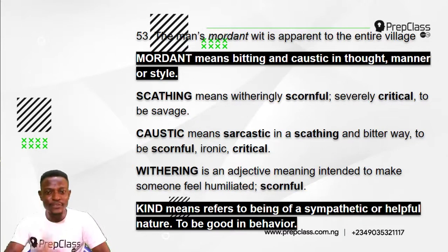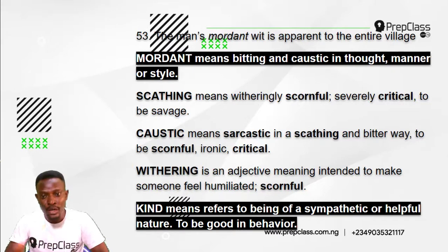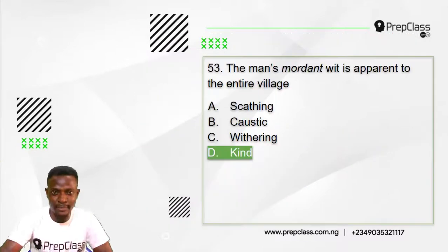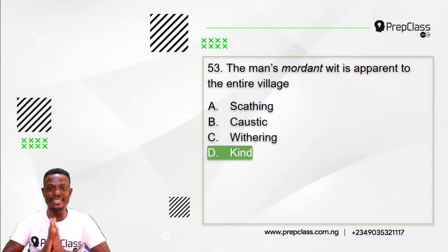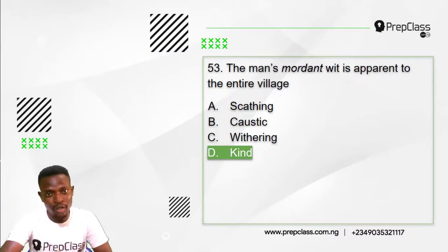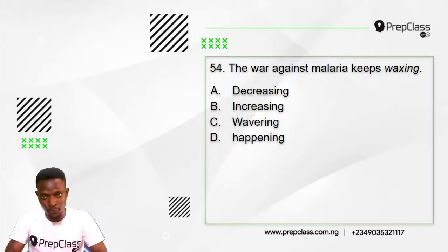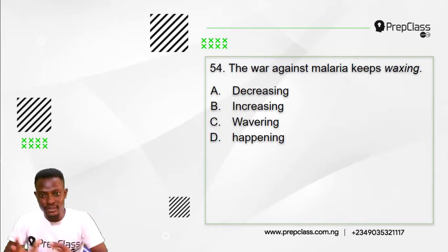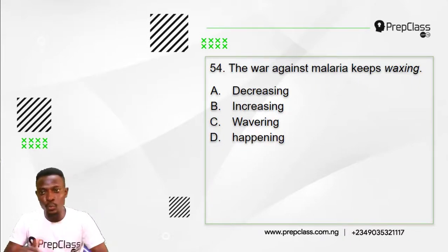'Kind' refers to being of a sympathetic or helpful nature — to be good in behavior. So the opposite meaning to 'mordant' is 'kind.' The answer to question 53 is option D: kind.